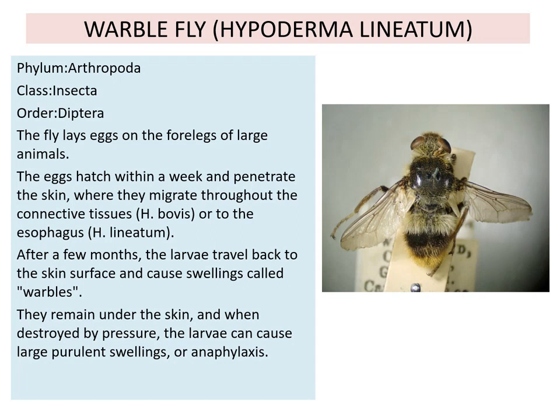The fly lays eggs on the forelegs of large animals. The eggs hatch within a week and penetrate the skin, where they migrate throughout the connective tissue or to the esophagus. After a few months, the larvae travel back to the skin surface and cause swellings called warbles. That is why it is known as warble fly.